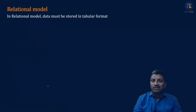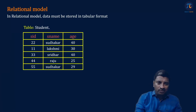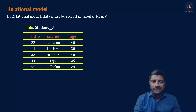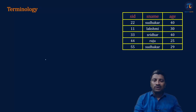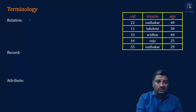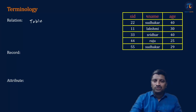In the relational model, data must be stored in tabular format. For example, we have a table whose name is student, with three columns: SID (student ID), SNAME (student name), and age. Now, the first terminology is relation. What is a relation? A table is called a relation. So this is an example of a relation.